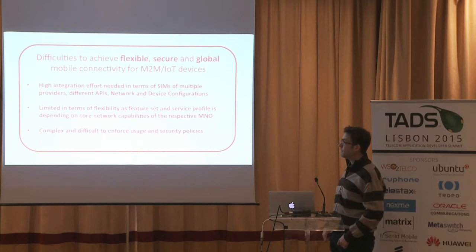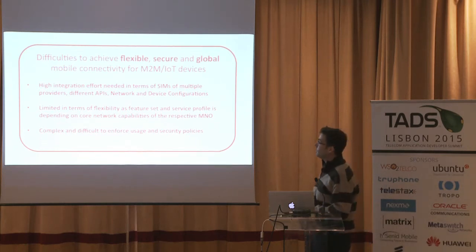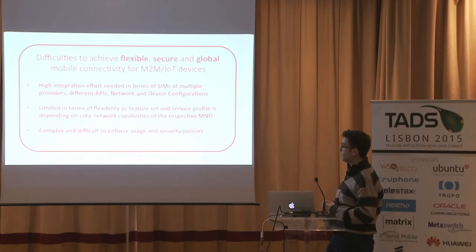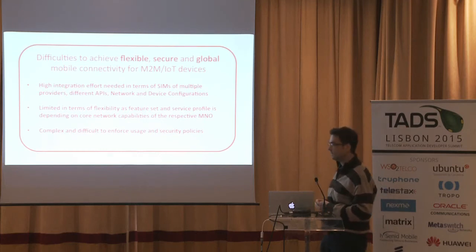When we talk about flexible, secure, and global mobile connectivity, this traditional model has real problems. First, there is a high integration effort — you may need multiple SIM providers and multiple operators and you need to integrate different APIs. You end up with different network and device configurations that are complex to manage. You're also limited to the features the home operator's core network provides or allows. And finally, it's complex and difficult to enforce usage and security policies — and security is something we focus on heavily at Ennify.